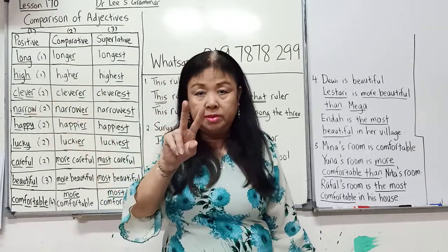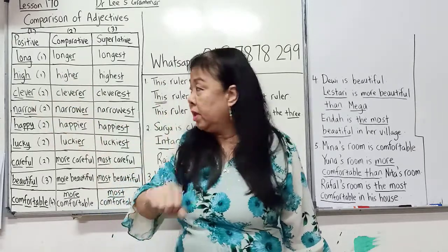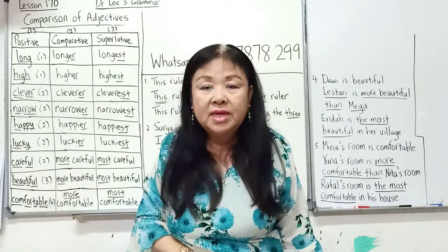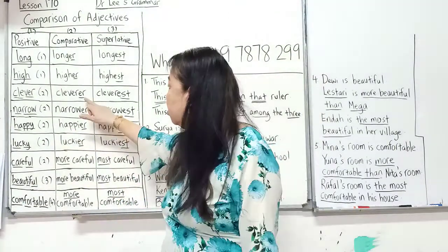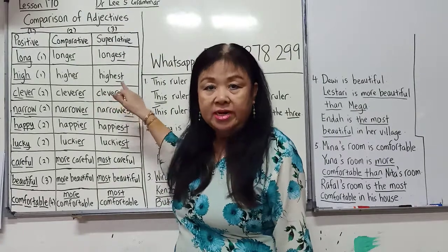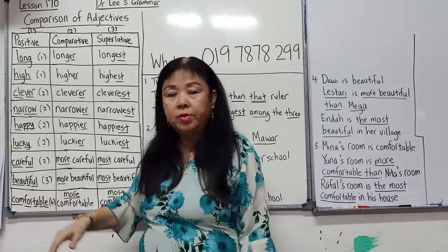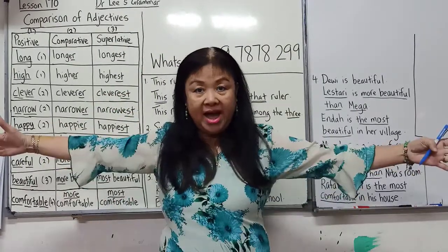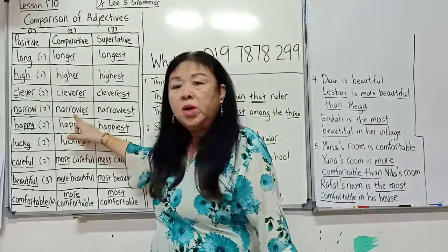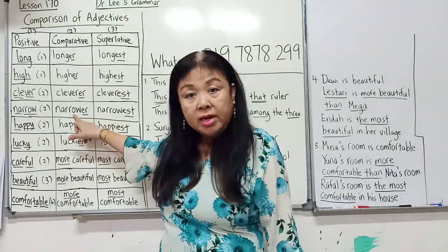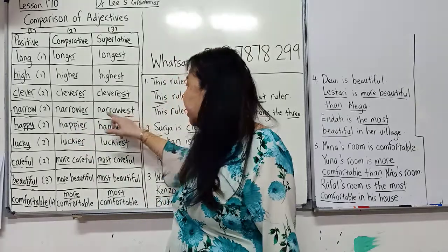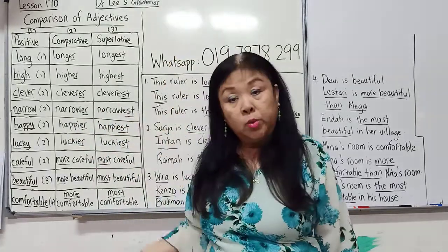Clever has two syllables, but for clever you still put ER: cleverer than, and then the cleverest. Narrow is also two syllables: narrower than, and the narrowest. When you put ER, you put than. When you put EST, you put the in front.